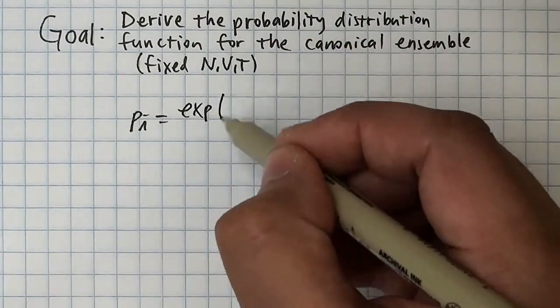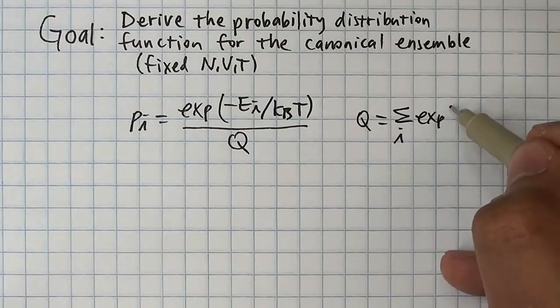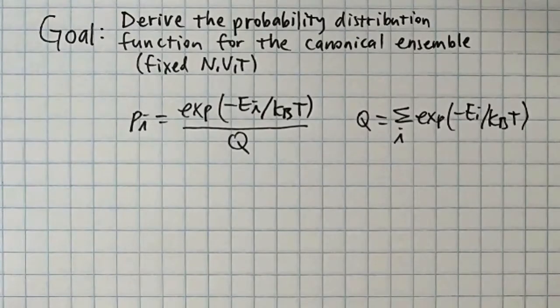which is a probability distribution function for the canonical ensemble. This tells us the probability of observing the assembly in a state specified by its energy. The denominator of the canonical distribution, q, is so useful that it has its own name: the canonical partition function.